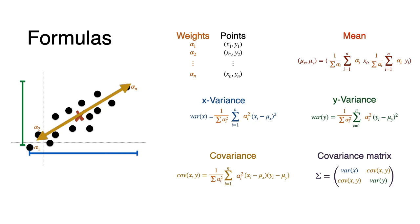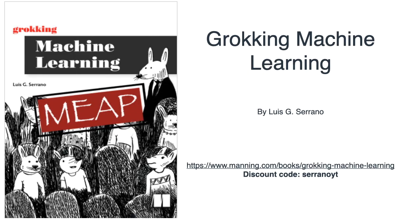This tells us a lot about the dataset if the dataset is weighted by some percentages. I'd like to remind you that I have a book called Grokking Machine Learning. This book explains supervised learning, algorithms, and several techniques for applying machine learning to real-life problems with code in Python. You can find it at the linked webpage and use the discount code SeranoYT for a 40% discount.